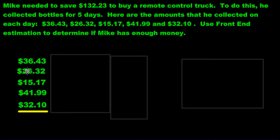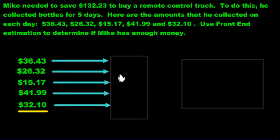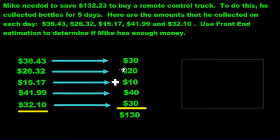You just keep the first digit and turn everything into a zero after that. So 36 becomes 30, 26 becomes 20. You see all the answers get transformed — that's the conversion. You add them up, you get $130. So that must mean he doesn't have enough saved up, right?